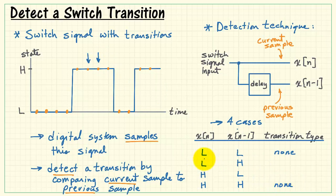Now let's take this case. Suppose the current sample is low and the previous sample is high. For example, this situation. Evidently this is a falling edge transition that we've just detected.